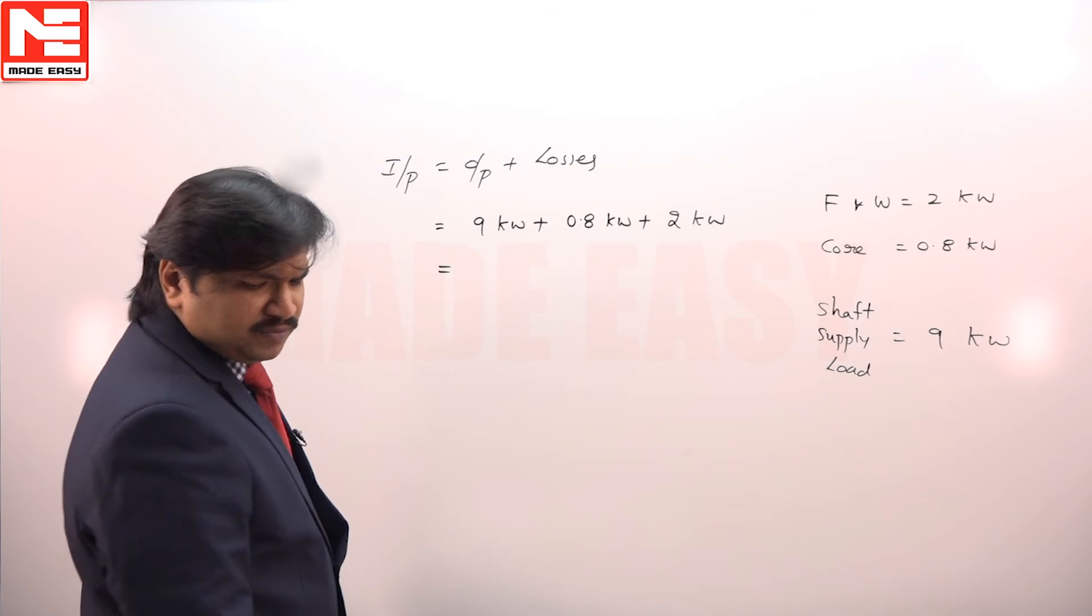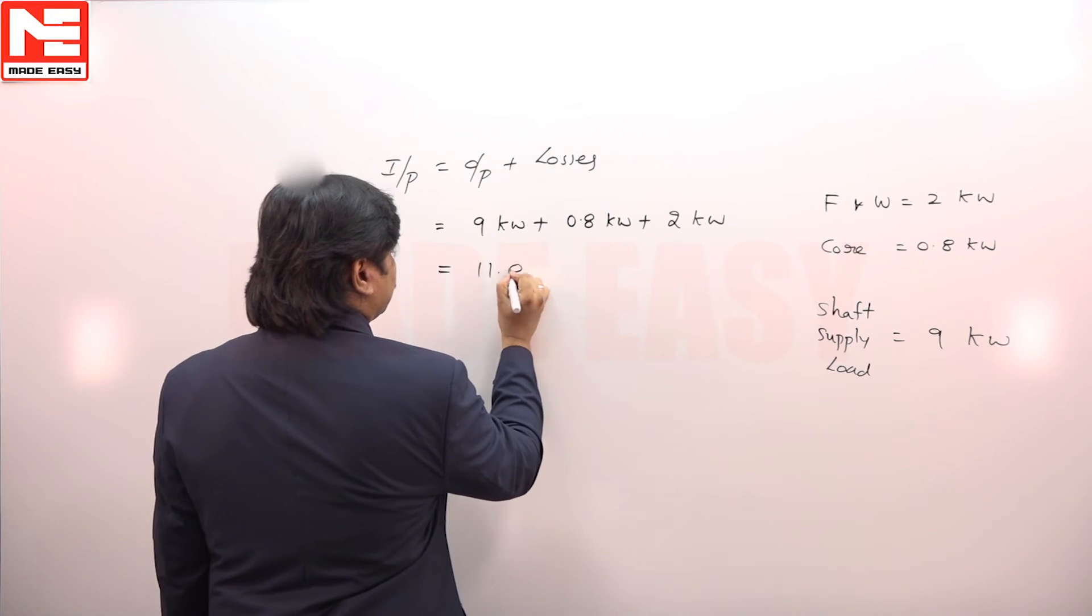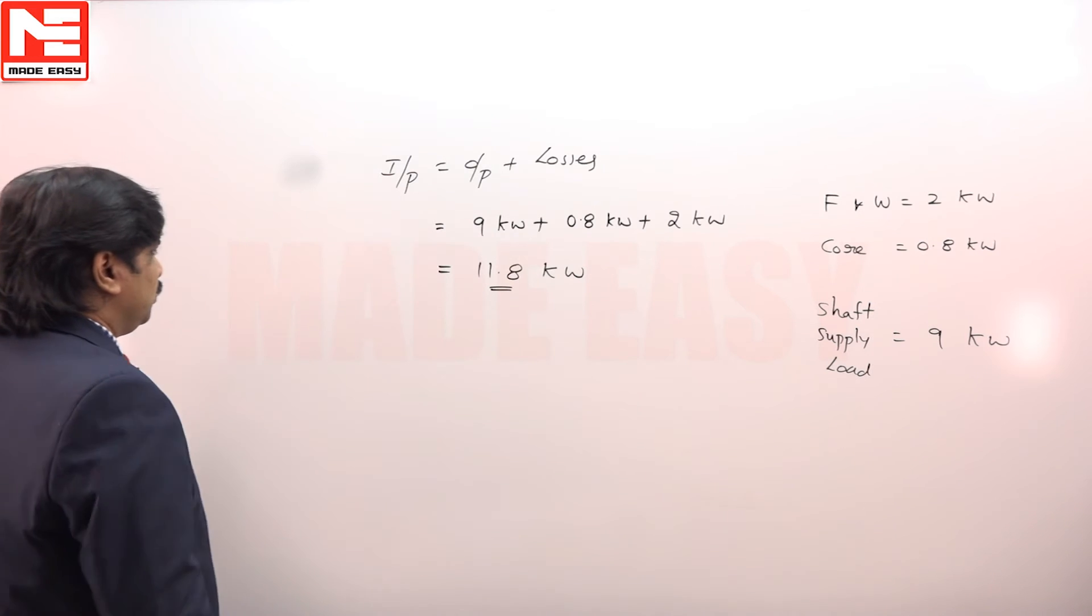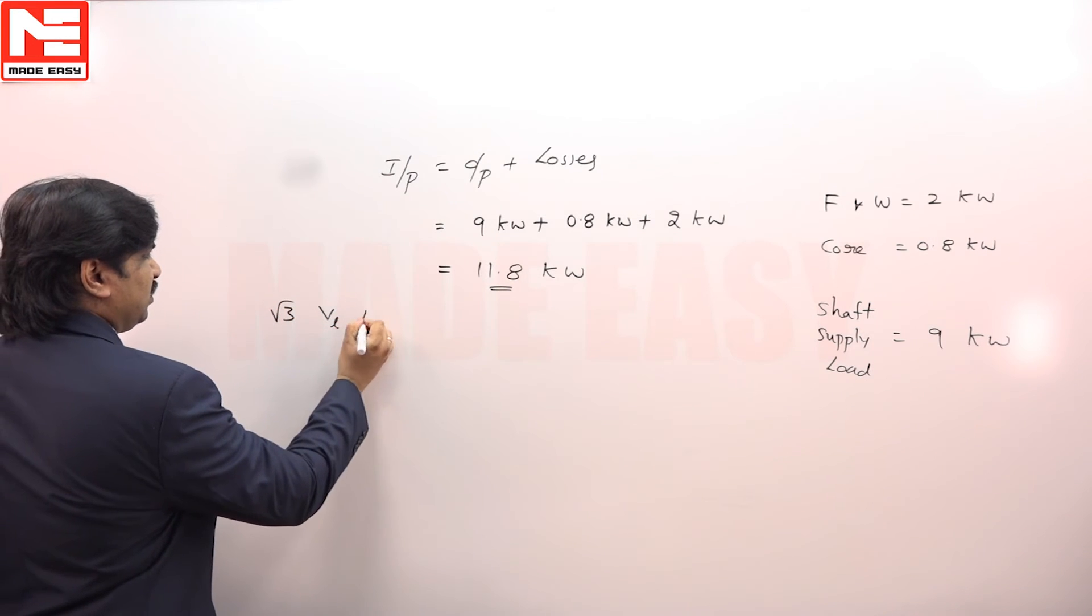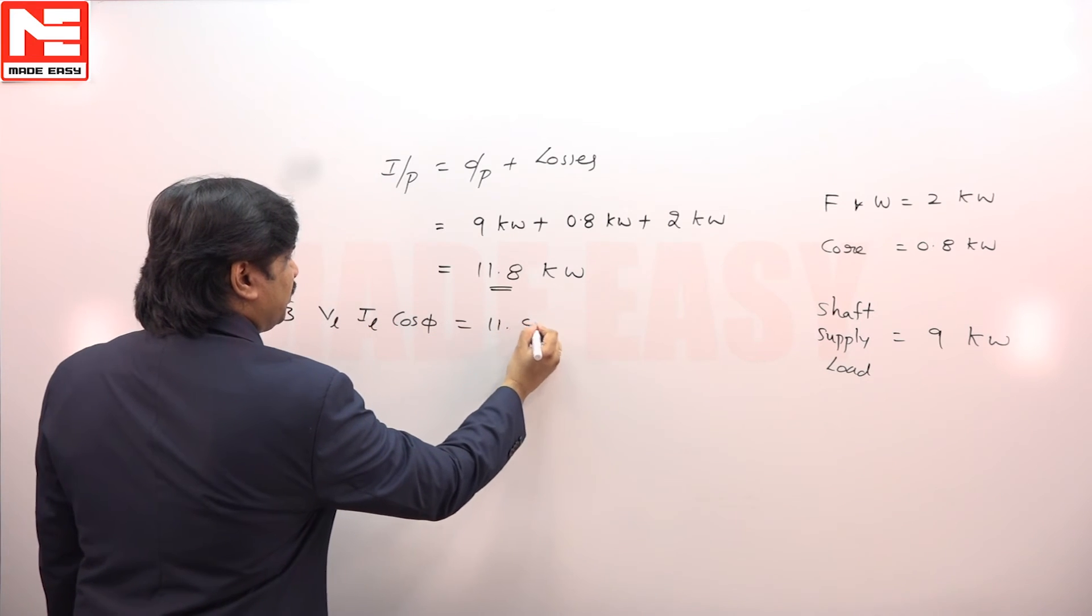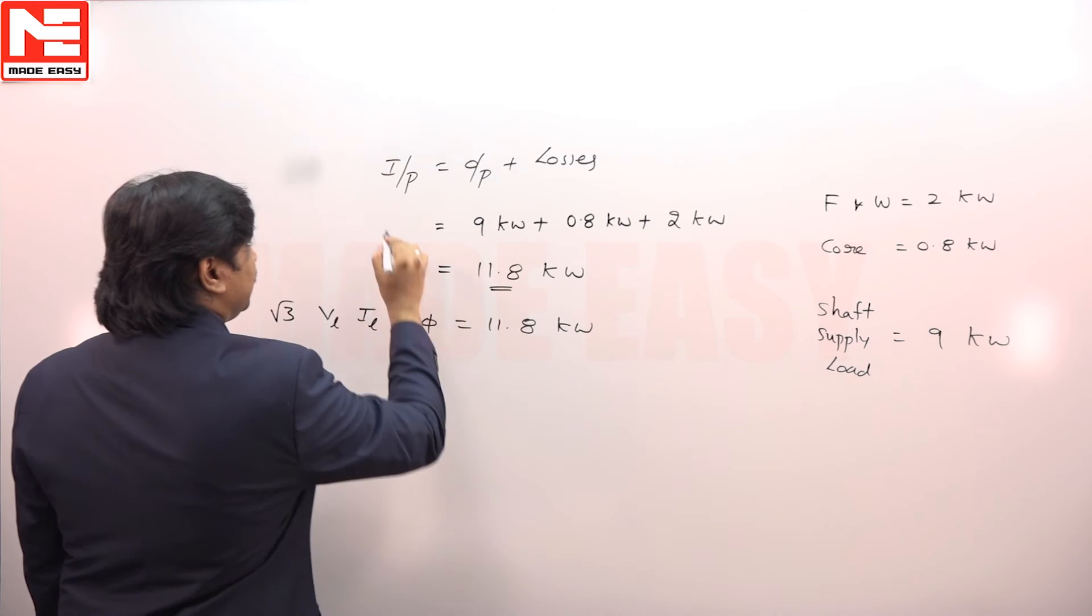So this is 11.8 kilowatt. Root 3 VL IL cos phi is equal to 11.8 kilowatt, that is the meaning, this input.